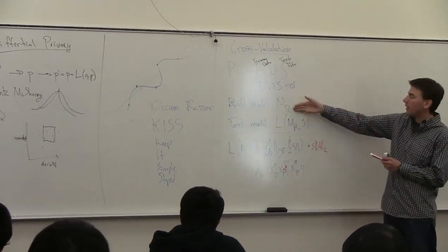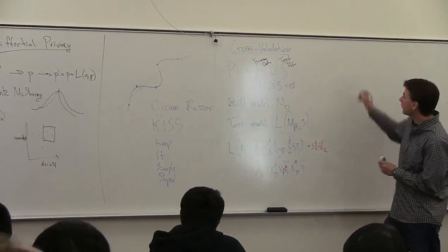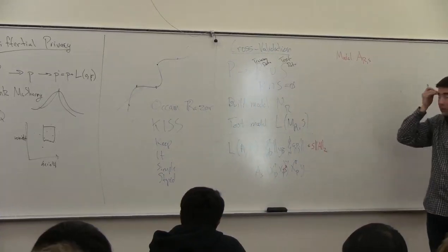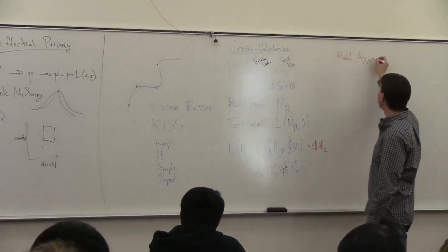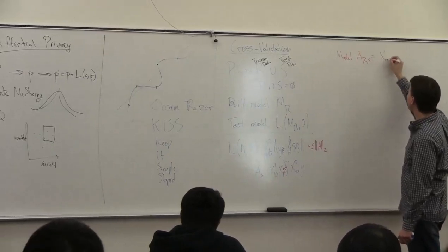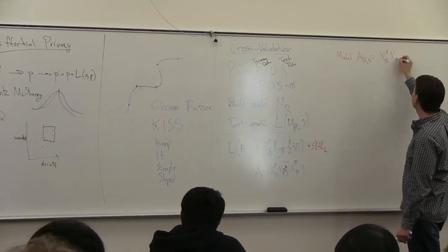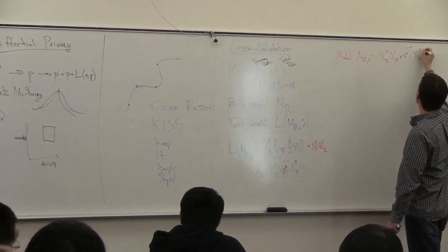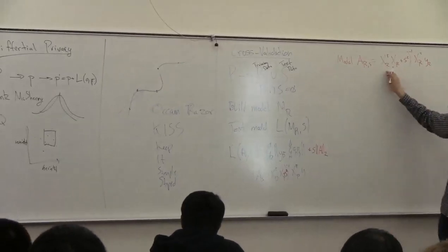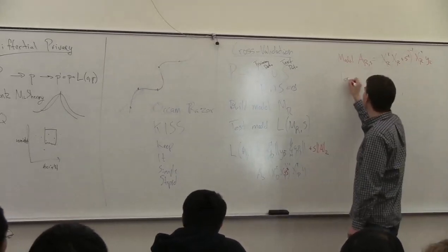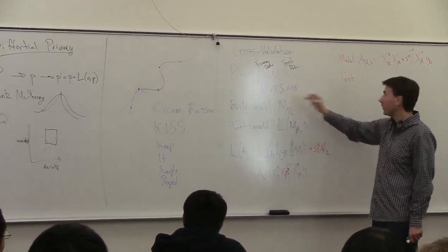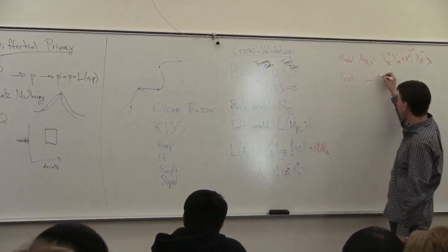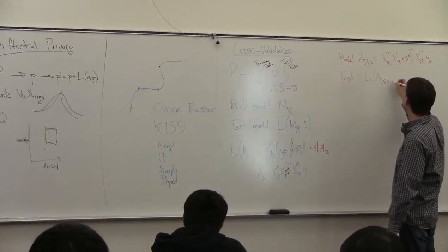So you want to build this model on R: A_{R}(S) = (X_R^T X_R + S^2 I)^{-1} X_R^T Y_R. Then you want to test this model on your set S, evaluating the loss function using model A_{R}(S) on the test data.